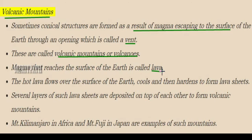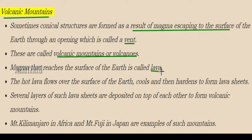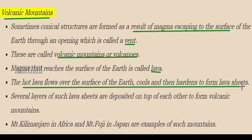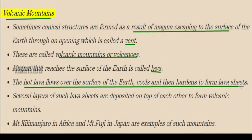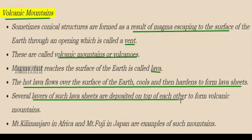The liquid magma inside the earth is called magma, and when it reaches the surface it is known as lava. This lava flows over the surface and when it cools down it hardens, forming lava sheets. These lava sheets are deposited one above the other through continuous flow of magma from the vent.